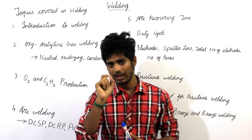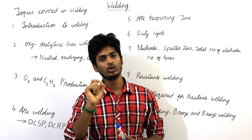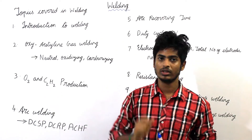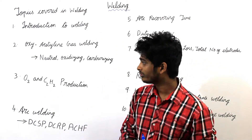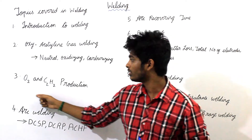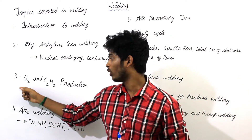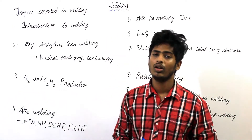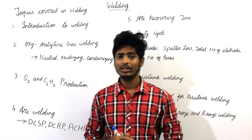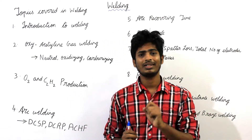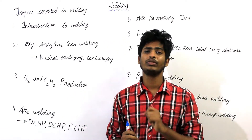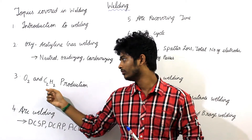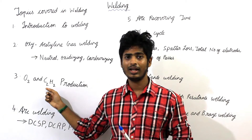We will see only those key points which are used for solving aptitude type questions. The third topic is production of oxygen and acetylene. We will see the most cheapest and safest way of producing oxygen and acetylene gas.